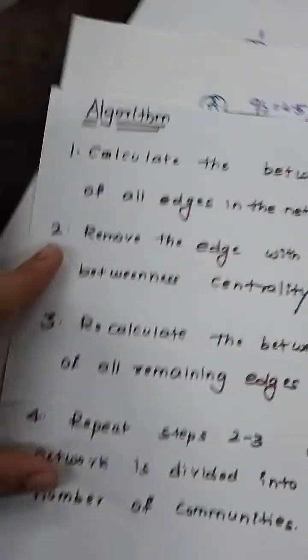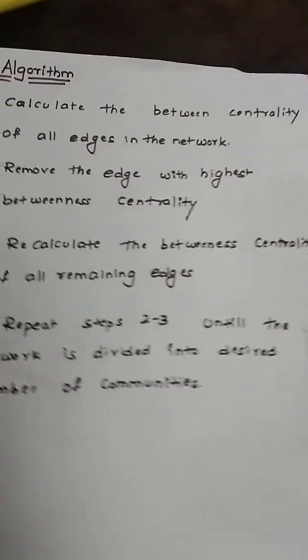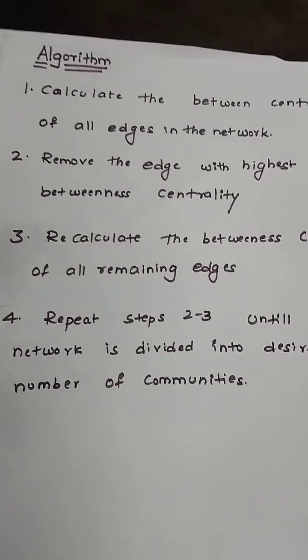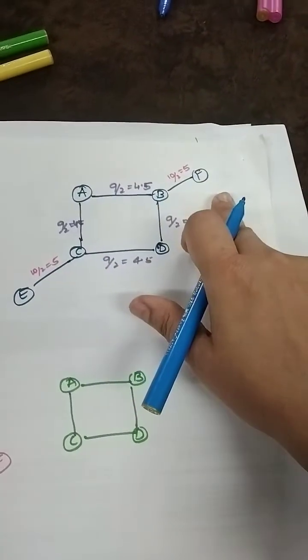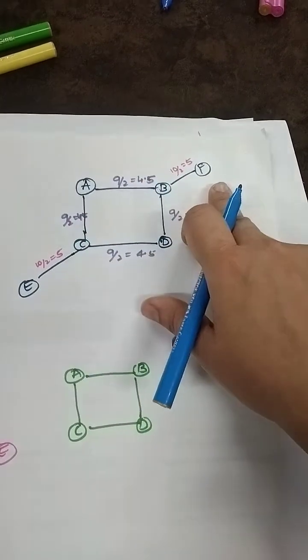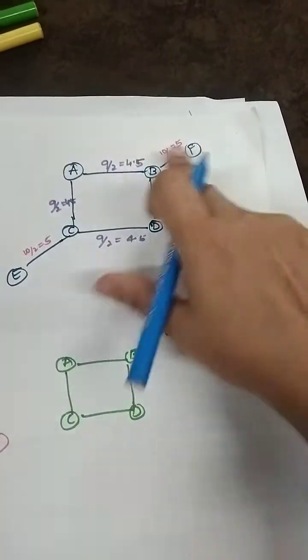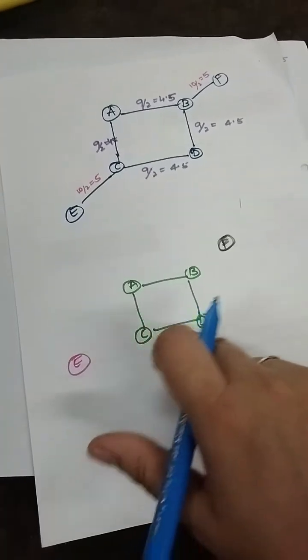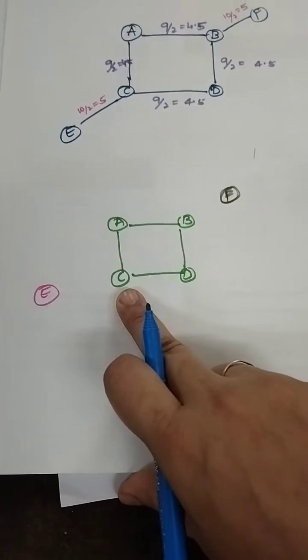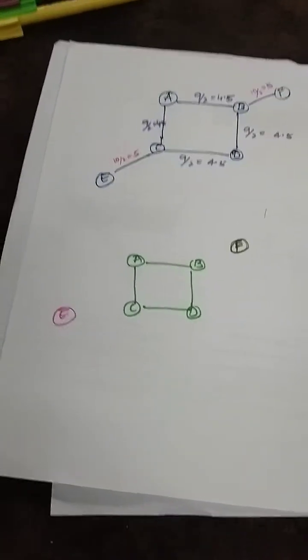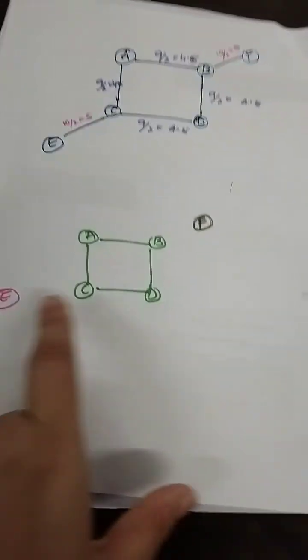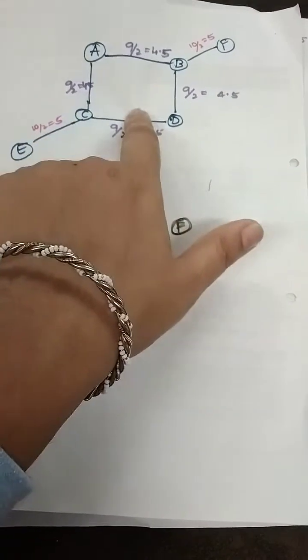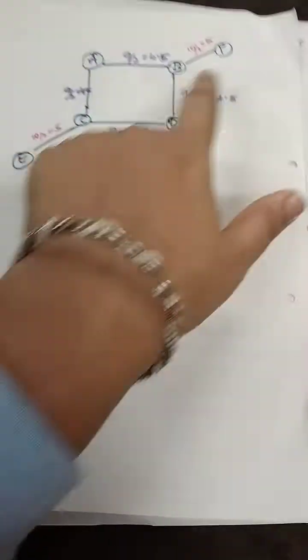Now you have calculated the betweenness centrality of all edges in the network — step 1 is done. The next step says: remove the edge with the highest betweenness centrality. The edges CE and BF have the highest betweenness centrality of 5, so those two edges are removed. After removing them, a new graph is obtained.